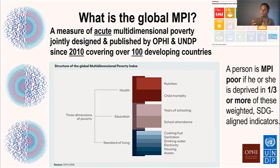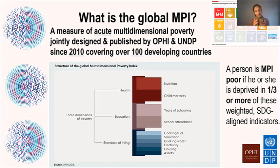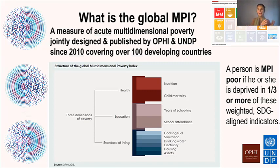So who is poor? A person is identified as poor if they are deprived in one third or more of these weighted indicators — two health or education indicators, all six living standard, or one health and education and three living standard indicators, for example.